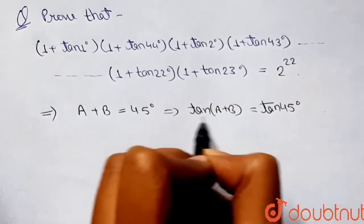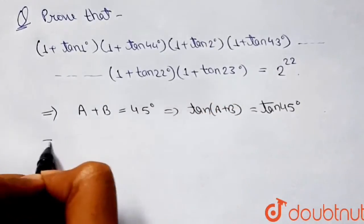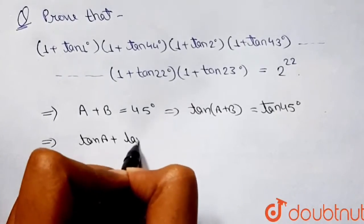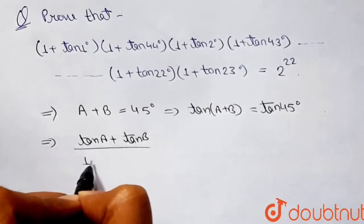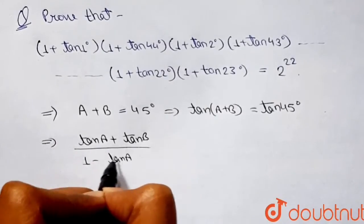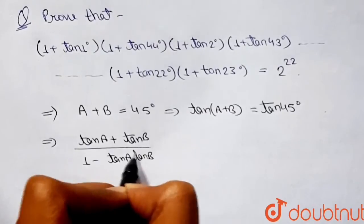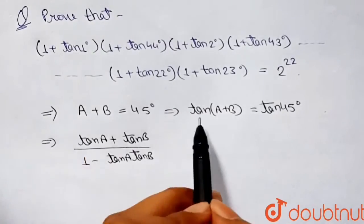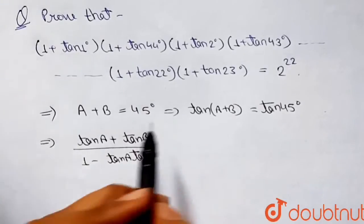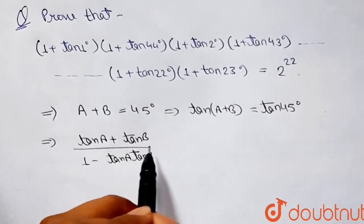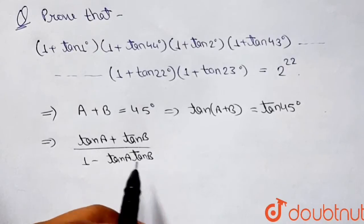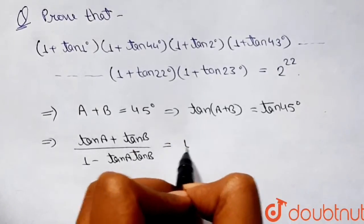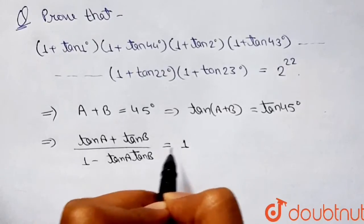Now I can write tan(a + b) as (tan a + tan b) / (1 − tan a · tan b). This is an important trigonometric identity. We know that tan 45° = 1, so that whole expression equals 1.